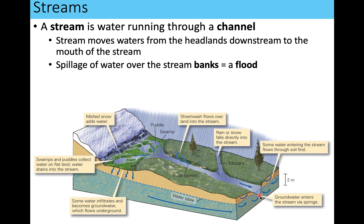The mouth is the bottom of the stream — where the stream ends — which means when it hits another body of water, for example, the ocean. The banks of the stream are the edges or sides of the stream during its average water flow. When there's more water than normal and the water spills up over the banks, that's what we call a flood, which we will get into in the second part of this week.